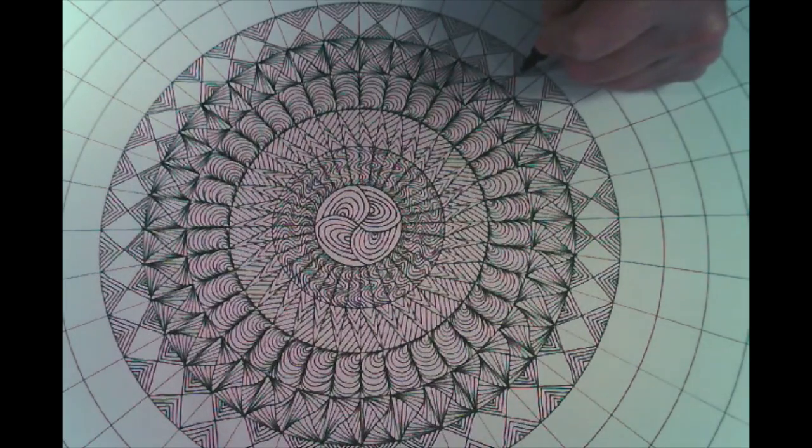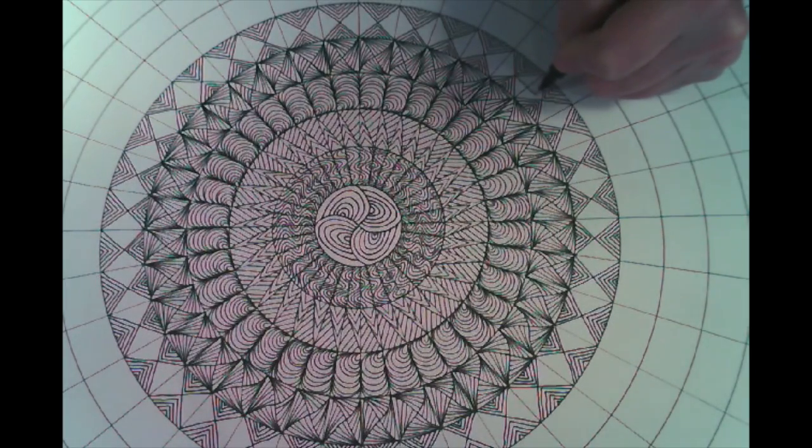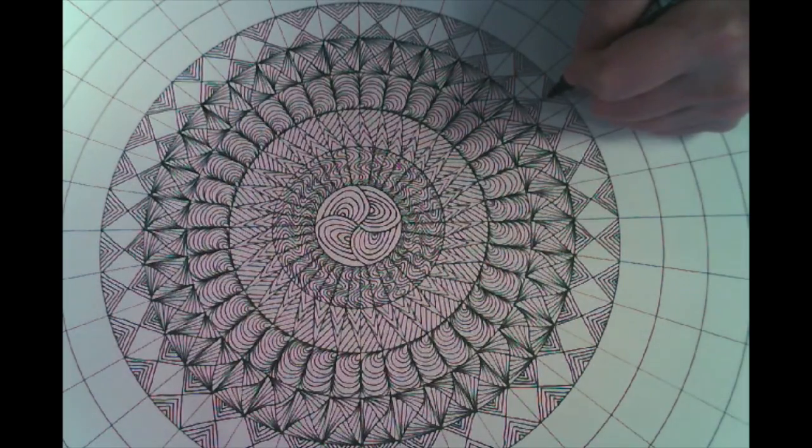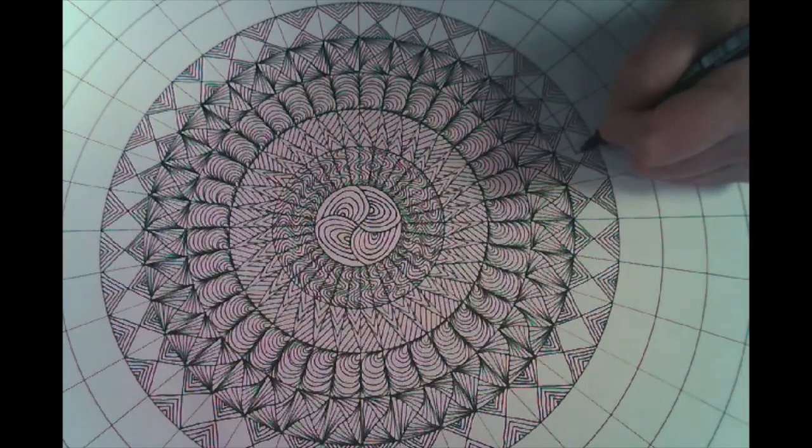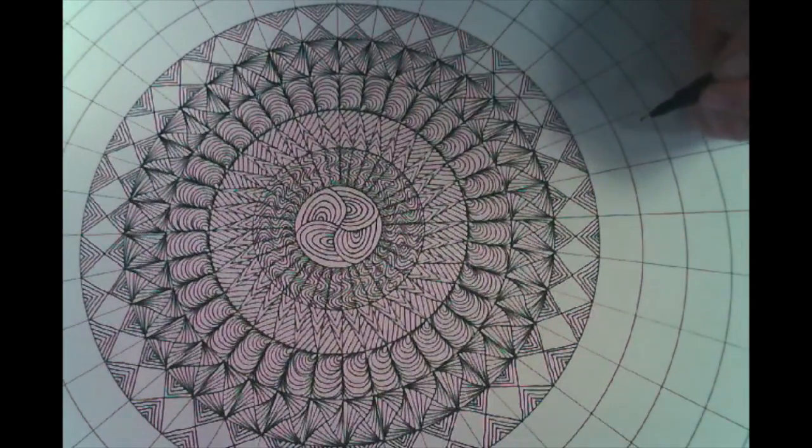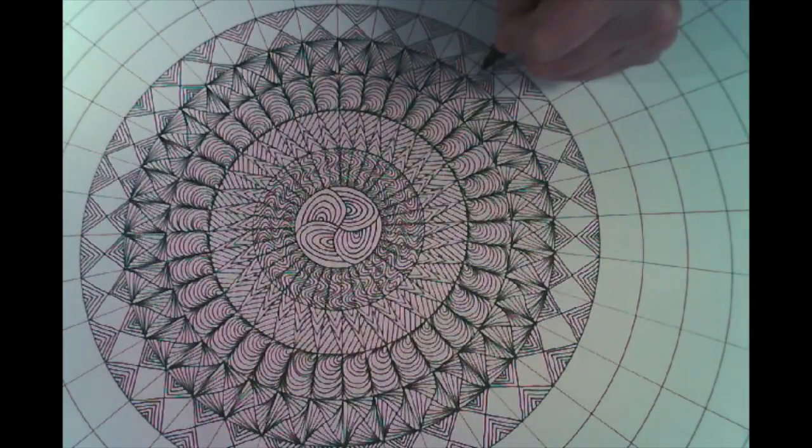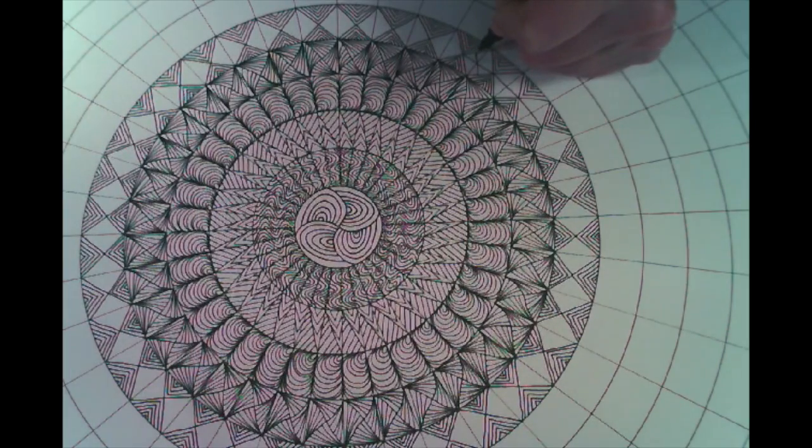Here I'm going to simply pass from one section to the other, creating a cross in here. It's very simple. I'm actually doing these lines more or less straight.